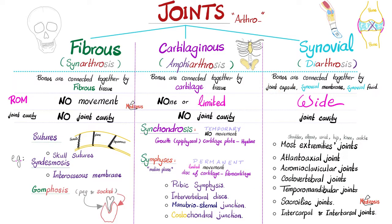We're talking about a capsule, synovial membrane, synovial fluid — the whole thing. That's a true joint. Examples include most extremity joints — your shoulder, elbow, wrist, hip, knee, and ankle. The atlanto-axial joint is synovial, as are the acromioclavicular, costovertebral, TMJ (temporomandibular), the sacroiliac, and the intercarpal and intertarsal joints.